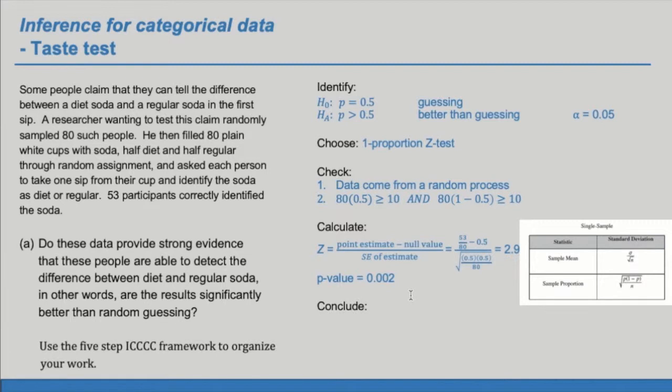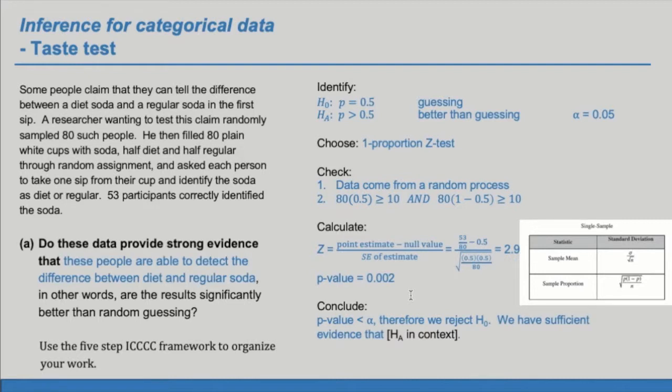So let's conclude. Because the p-value of 0.002 is less than our significance level alpha, 0.05, therefore we reject H sub 0. And if we reject H sub 0, we have evidence for the alternate hypothesis. So going back to the question, did these data provide strong evidence that these people are able to detect the difference between diet and regular soda? So yes, we do have sufficient evidence that these people are able to detect the difference between diet and regular soda better than by random guessing.